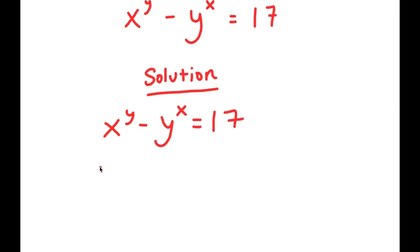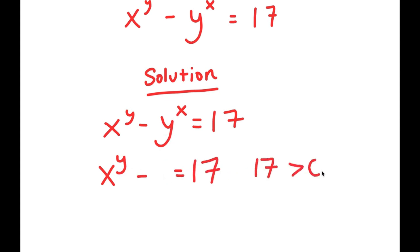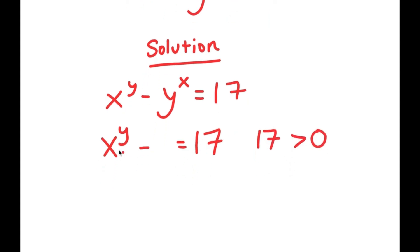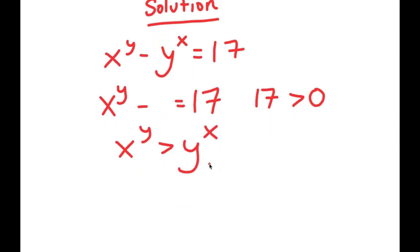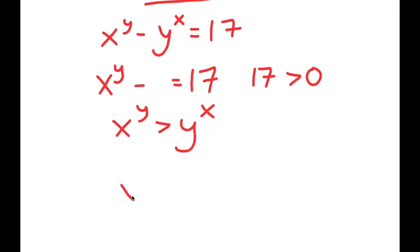Notice how we have x to the power of y minus something is equal to 17. And 17 is greater than 0, meaning x to the power of y is greater than y to the power of x. And this also must mean that x is greater than y, and y is greater than 0.